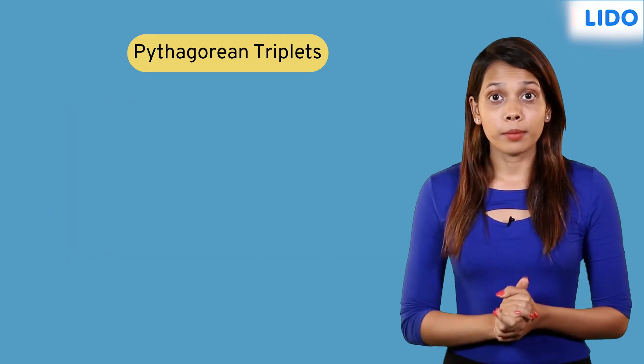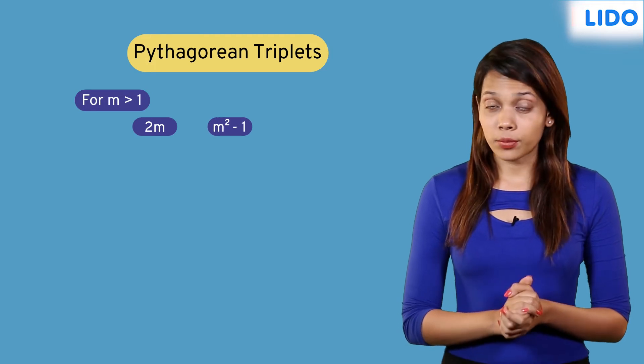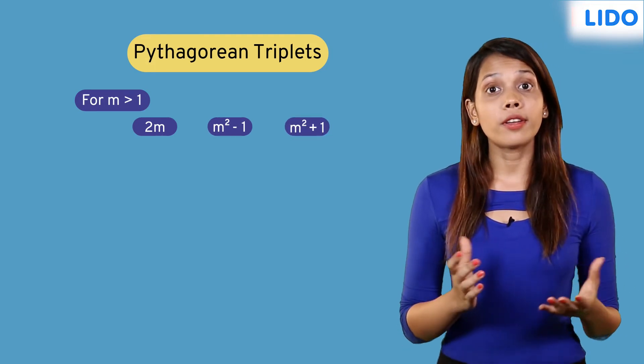For any whole number m greater than 1, 2m, m²-1, and m²+1 always form a Pythagorean triplet.